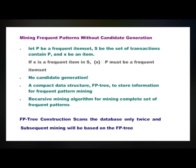Mining frequent patterns without candidate generation: let B be a frequent item set, S be the set of transactions containing B, and X be an item. If X is a frequent item in S, then X union B must be a frequent item set. This approach uses a compact data structure FP-tree to store information for frequent pattern mining, and a recursive mining algorithm for mining a complete set of frequent patterns. FP-tree construction scans the database only twice, and subsequent mining is based on the FP-tree.